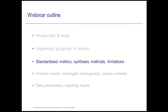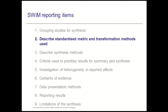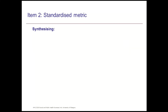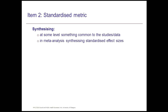Moving on to the next section, which is about reporting standardized metrics, synthesis methods, and limitations of the synthesis. The first item is about describing the standardized metric. When synthesizing, we find something common to the studies or data, and we call that the standardized metric. In a meta-analysis, the standardized effect sizes are the standardized metric. For quantitative data from intervention studies, the standardized metrics available to us will be effect sizes, direction of effect, or p-values.